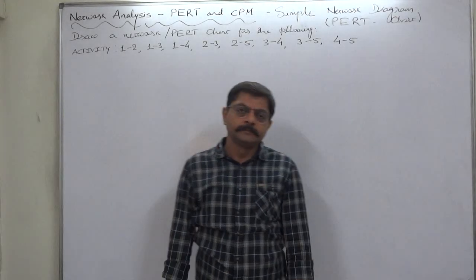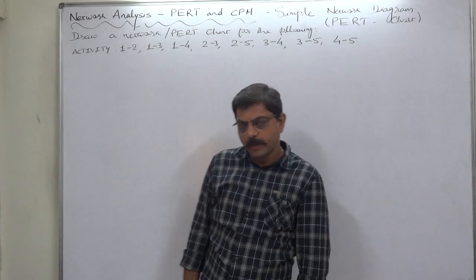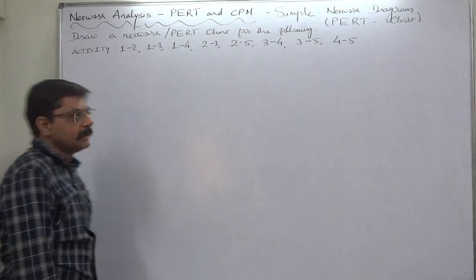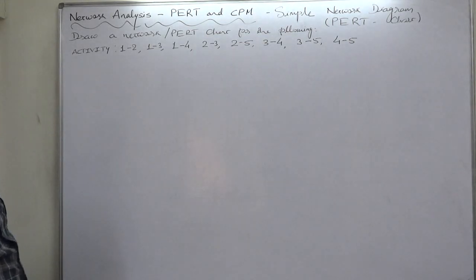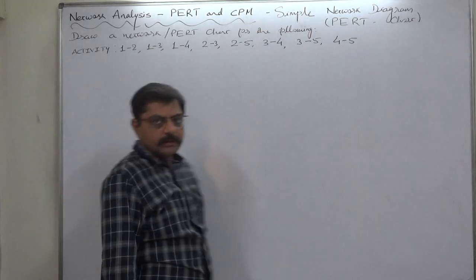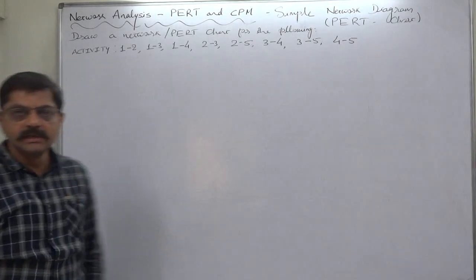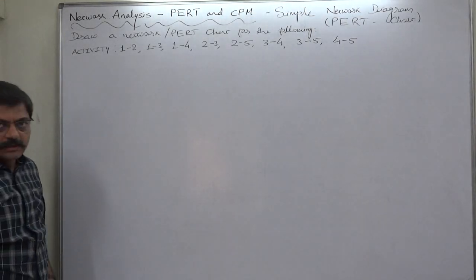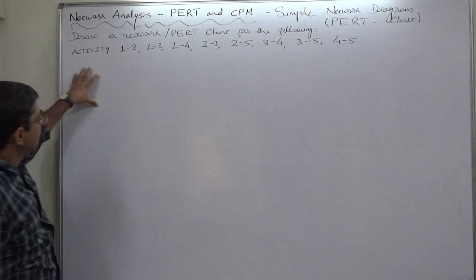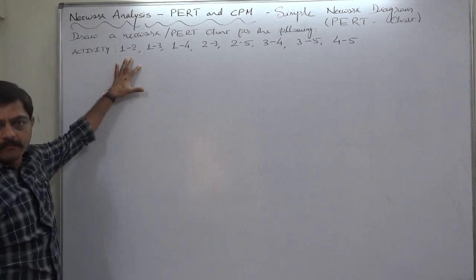Namaskar and welcome to network analysis PERT and CPM. Now this time we have a problem where instead of giving information about activities with their predecessor, the information is available only with event numbers.